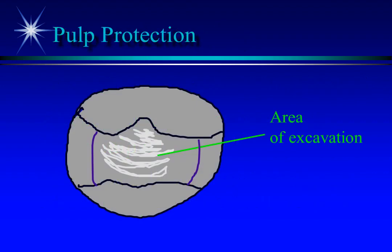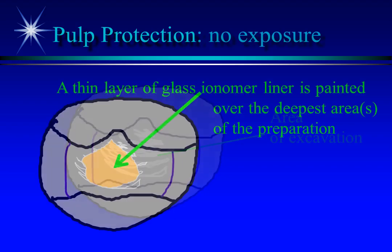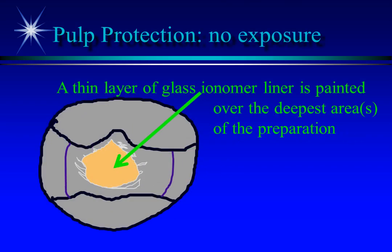In cases where no exposure exists in a deep excavation, apply glass ionomer to the deepest area. There is no need to place it on any dentin where you have 1.5 millimeters of dentin remaining. Do not place it on the DEJ or cavo-surface margins.